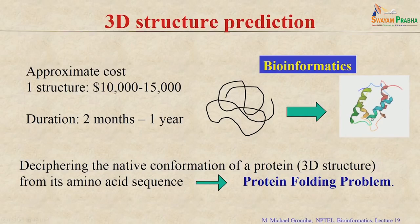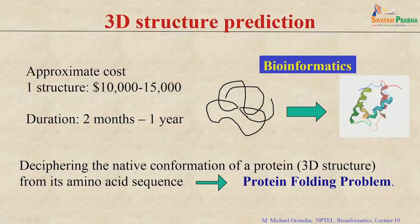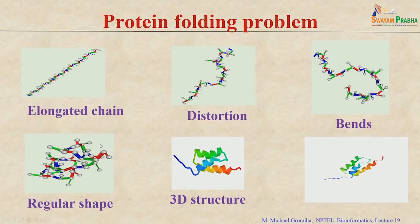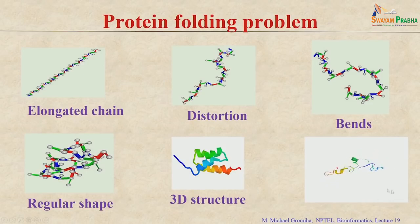Deciphering the native conformation of a protein from its amino acid sequence is called the protein folding problem. In 1963, Anfinsen stated that the amino acid sequence contains the information regarding the structure, and it may be possible to get the 3D structure from just the amino acid sequence. The animation shows how from the unfolded state a protein finally folds into a stable 3-dimensional structure — starting from an elongated chain with distortions and probable bends, finally attaining a regular 3D shape.